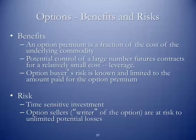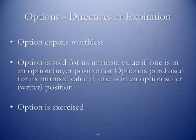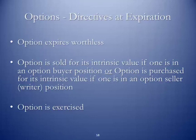The option seller is also called the writer of the option, and they are at risk to unlimited potential losses. If you're buying a call option, you're buying a ceiling price — you will never pay more than the strike price in your agreement. But the writer of that option has exposure if the price runs right through that. When options expire, they can expire worthless if you never executed the option. They can be sold for the intrinsic value if one is in an option buyer position, or purchased for its intrinsic value if one is in a seller position. Anytime between execution and expiration, if there's value in the option, someone trading options could cash it in and make money on it. Or the option gets exercised sometime before expiration, or it automatically is exercised on expiration.